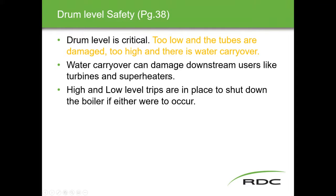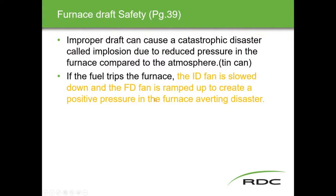For drum level safety, high and low level trips are in place to shut down the boiler if either condition occurs, always in conjunction with level transmitters. In larger industrial systems these are level transmitters with full control logic; in basic heating systems such as municipal wastewater plants they may be all switches — high temperature, low temperature, high and low water, and flow switches. As systems get bigger, the technology increases.